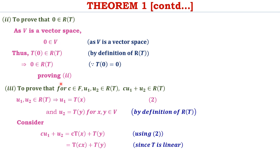To prove the third condition, we assume C is an element of field F, and U1 and U2 are elements of R(T); we need to show CU1 plus U2 is also an element of R(T). By definition of R(T), U1 and U2 can be written in the form T of an element of V. So we choose U1 equal to T of X where X belongs to V, and U2 equal to T of Y where Y belongs to V.